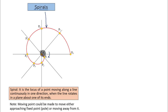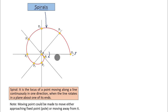One thing to remember: this could have been done in a different sense also. Initially I considered the pole and the moving point overlapping, and as the link started rotating the point kept moving further away. We could have done this differently — given it an anticlockwise rotation — and P7 would have become P1, P6 would have become P2. Clockwise or anticlockwise really does not matter; ultimately you are going to get a spiral.